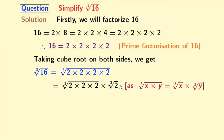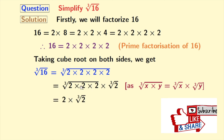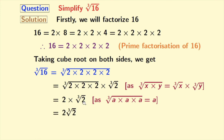Here we have used the rule that cube root of x times y is equal to cube root of x times cube root of y, where x is equal to 2 times 2 times 2 and y is equal to 2. Now from the first cube root we get 2, using the rule that cube root of a times a times a equals a, where a is 2. The second cube root, that is cube root of 2, remains the same. After simplification, we get 2 cube root of 2, and this is our final answer.